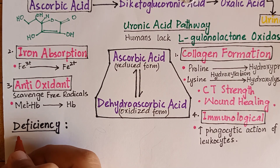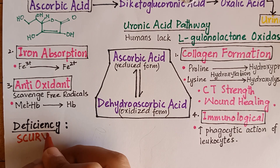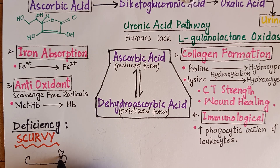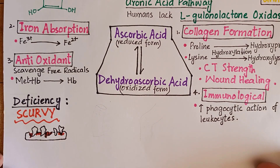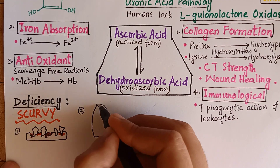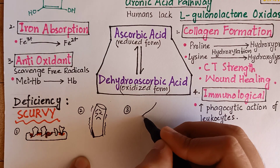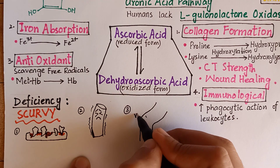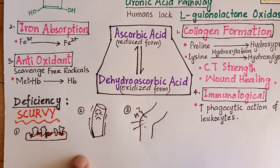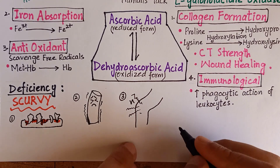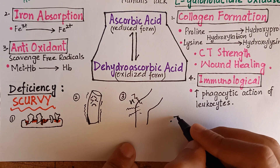The deficiency of vitamin C results in a disease called scurvy. Scurvy is characterized by sore and spongy gums, loose teeth, fragile blood vessels, swollen joints, and anemia. These symptoms can be explained by a deficiency in hydroxylation of collagen, resulting in defective connective tissue.